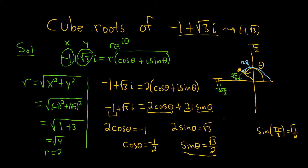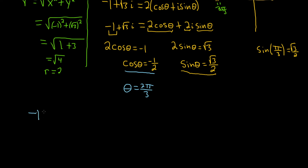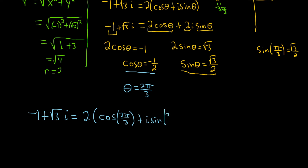Since x is negative and we're in quadrant 2, we take pi, which is the same as 3 pi over 3, and subtract the reference angle pi over 3, leaving us with 2 pi over 3. Everything checks out because cosine is the x and sine is the y on the unit circle. So our angle theta, the argument, is 2 pi over 3. Therefore negative 1 plus square root of 3 i equals 2 times parentheses cosine of 2 pi over 3 plus i sine of 2 pi over 3.